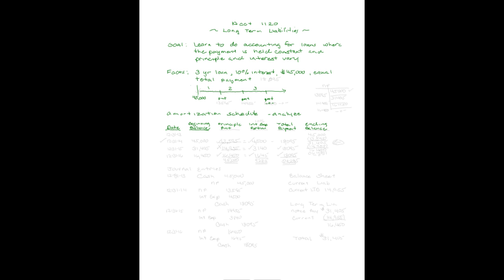We have our headings: date, beginning balance, principal payment, interest expense portion — and those together equal the total payment — and our ending balance, which will become our beginning balance next time. Starting with our facts: on 12-31-13, we borrow $45,000 on the last day of the year, so it's our ending balance. There was no beginning balance. That puts us right here on our timeline.